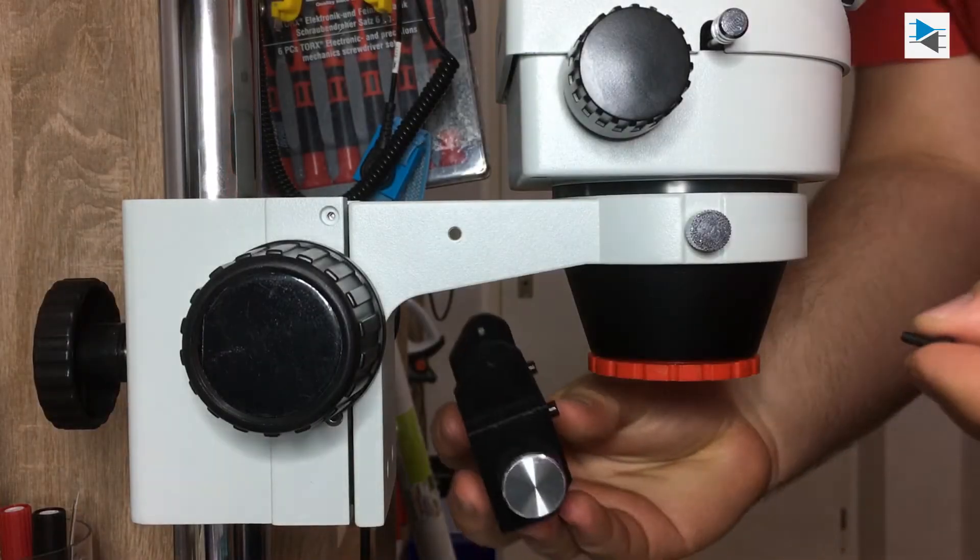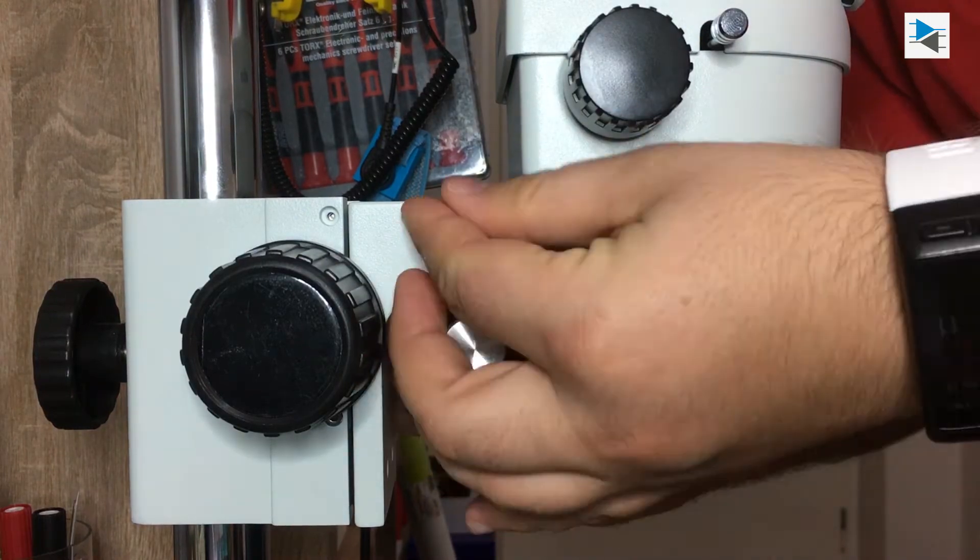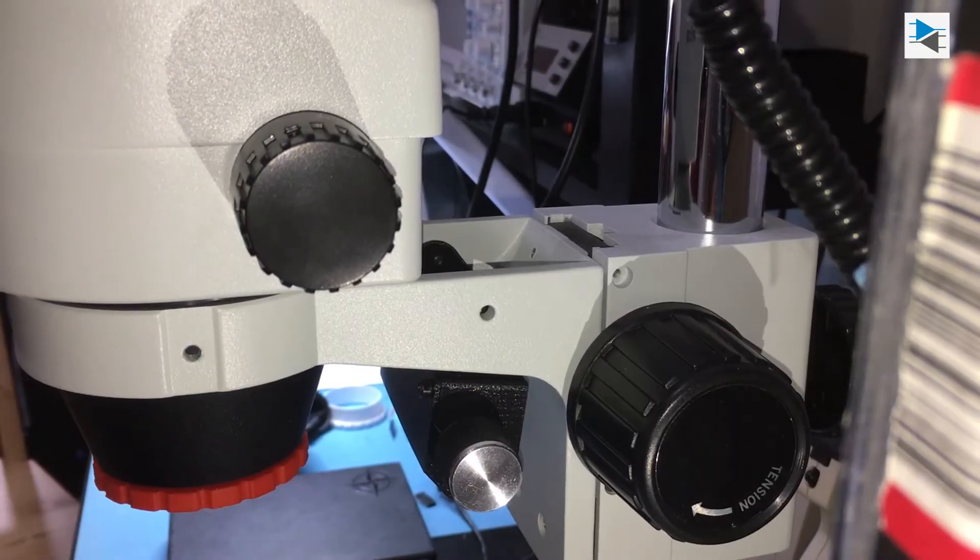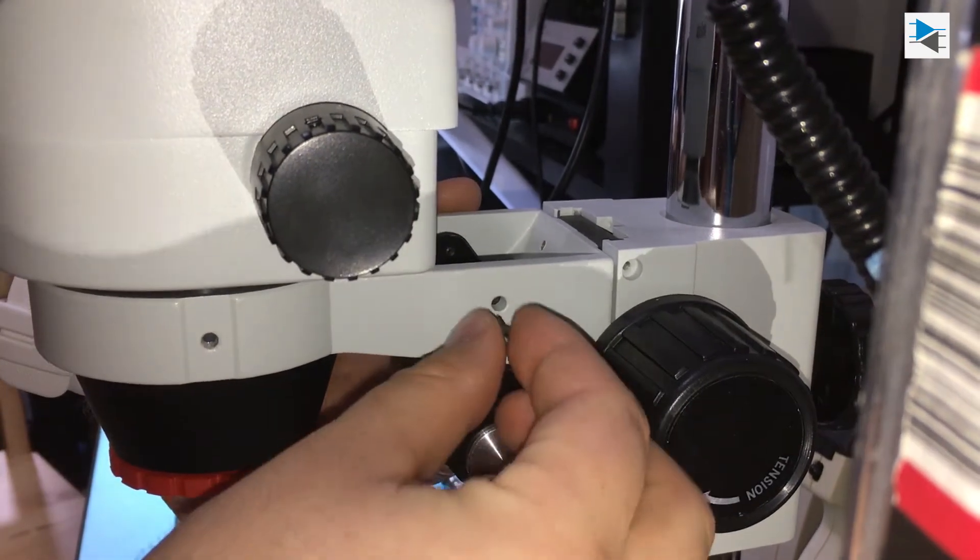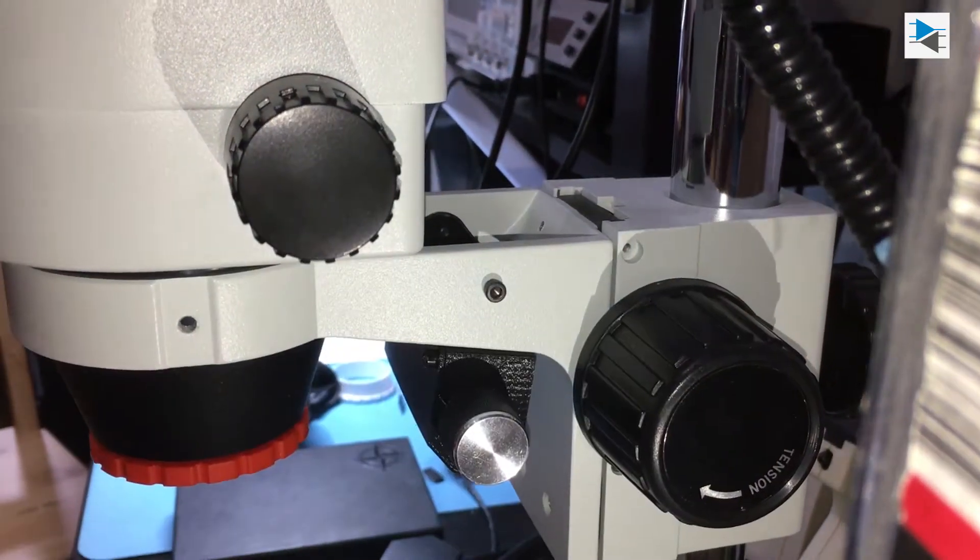The finished control unit is mounted to the microscope support using two holes and two M3 screws. Threads for the screws have been cut into the 3D printed part beforehand using machine taps.